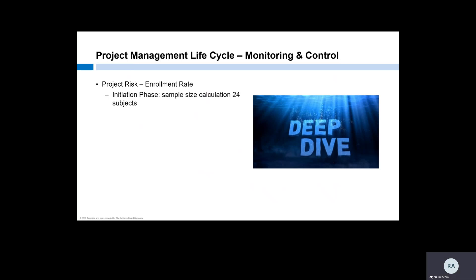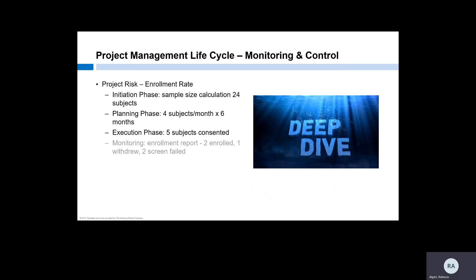During the initiation phase, the sample size calculation determined that we needed 24 subjects to power the study. During the planning phase, we established our anticipated enrollment rate at four subjects a month over the course of six months. We executed the study and started enrolling, documenting subjects that were consented in our study database and marking whether they went on to be randomized, withdrew, or screen failed. We consented five subjects during the first four weeks. To monitor our progress, after the first month of enrollment, the CTPM pulled an enrollment report from the database. According to the report, we consented and screened five subjects: two went on to be randomized, one withdrew consent, and two others were screen failures.